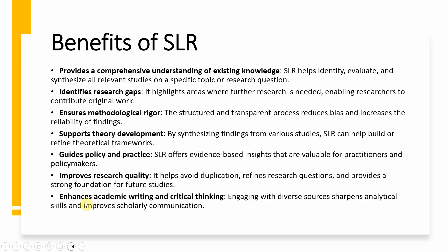Furthermore, the most important part is it enhances your academic writing and critical thinking. By engaging with diverse sources, it sharpens analytical skills and improves scholarly communication. The more you read, the better you get at writing. The only secret to writing quality research papers is reading. When you are doing a systematic literature review, you are reading a lot, and the more you read, the more you understand the pattern of writing published in high-quality journals.